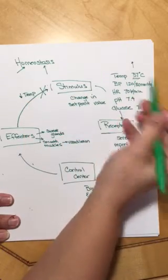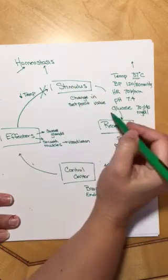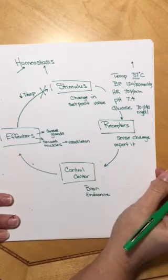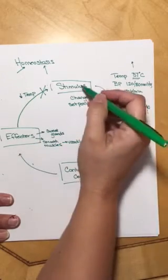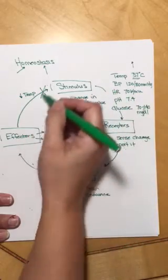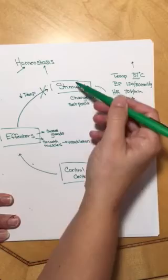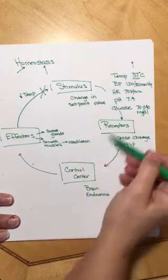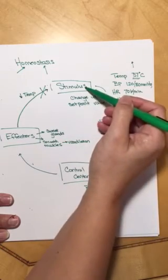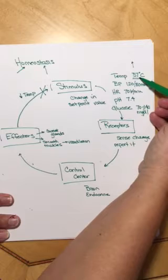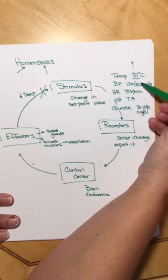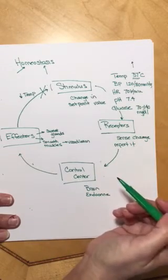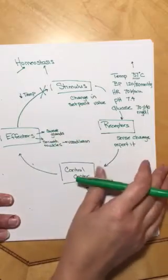Once we get back to normal body temperature, the stimulus is gone, the receptors don't have anything to pick up, the control center doesn't have anything to do, and we turn off our effectors. So you can see this is a big loop: stimulus, receptors, control center, effectors. These parts can be different, and the stimulus itself can be different — a higher temperature or a lower temperature. Either one is going to result in receptors picking it up, the control center telling them what to do, and the effectors doing it.